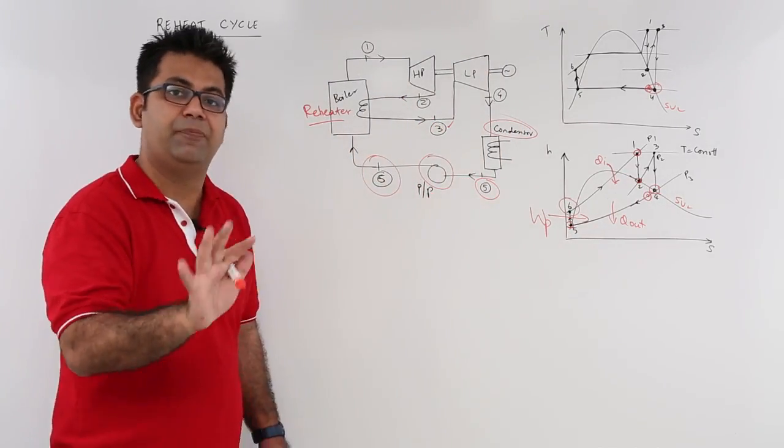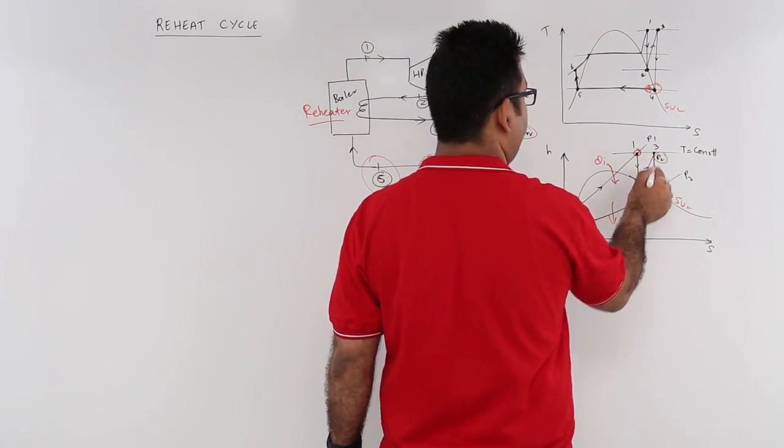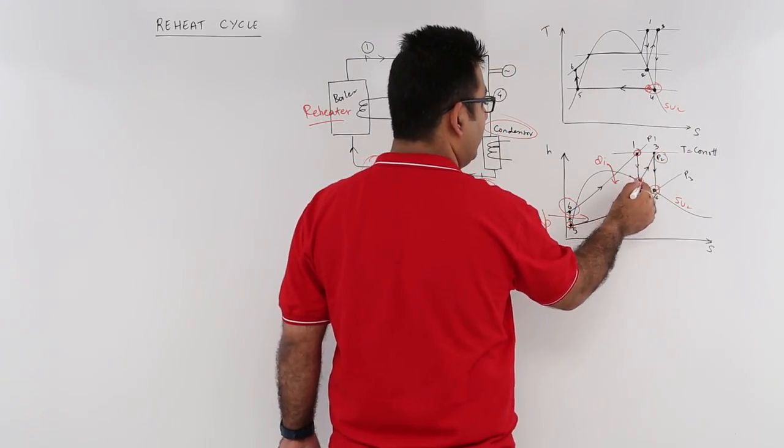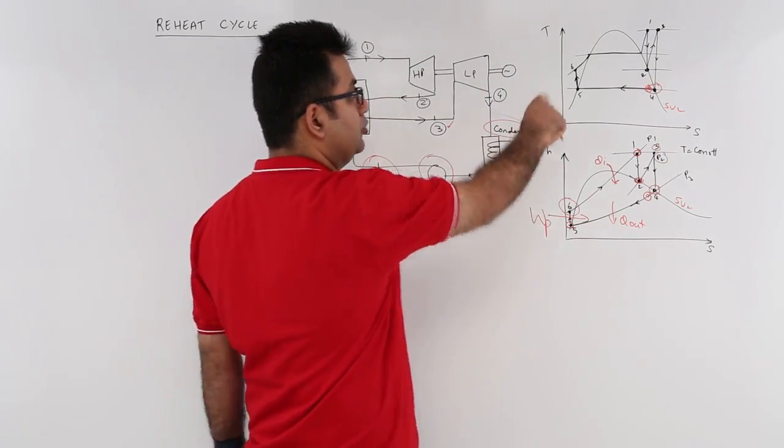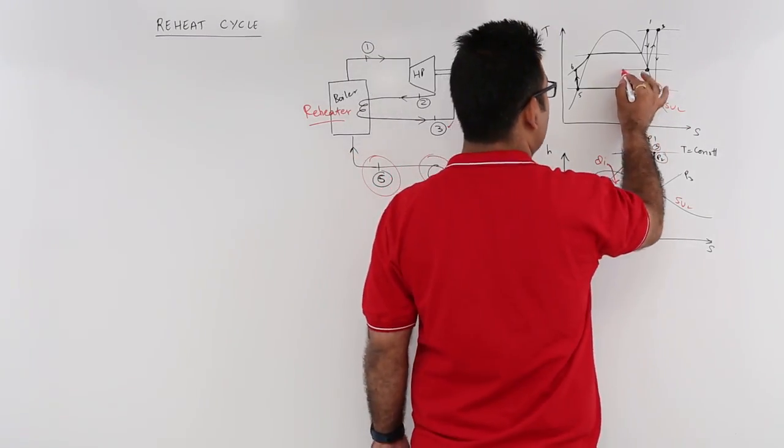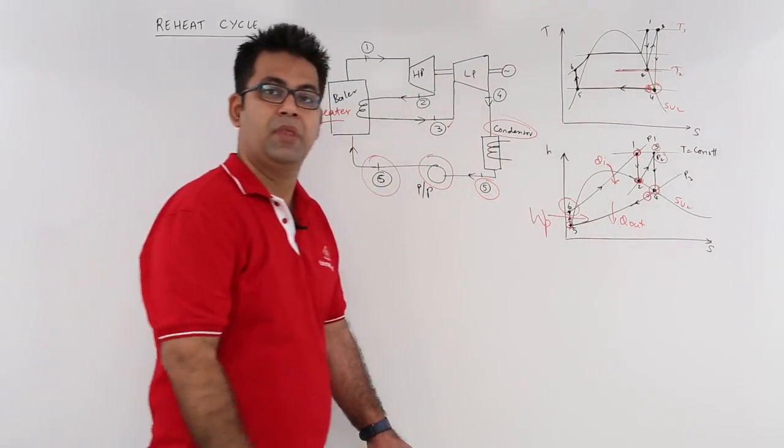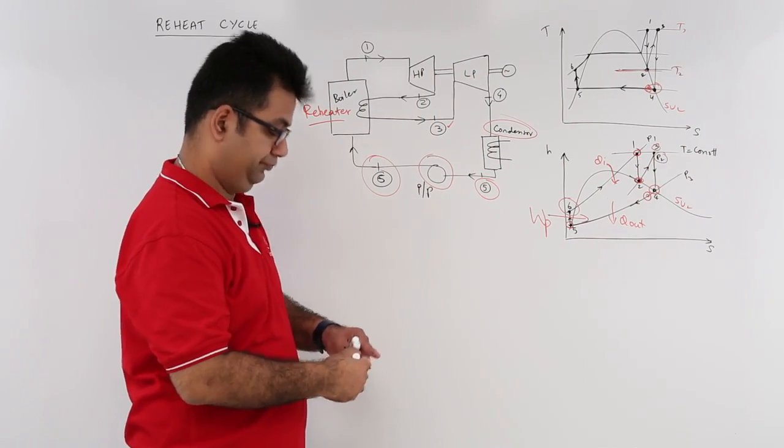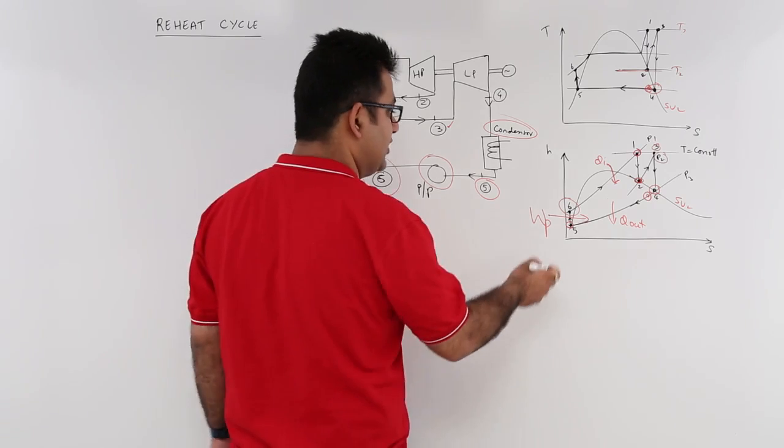You are not varying the pressure—the pressure is the same, that is P2. So at P2, you increase it from T2 to T3.